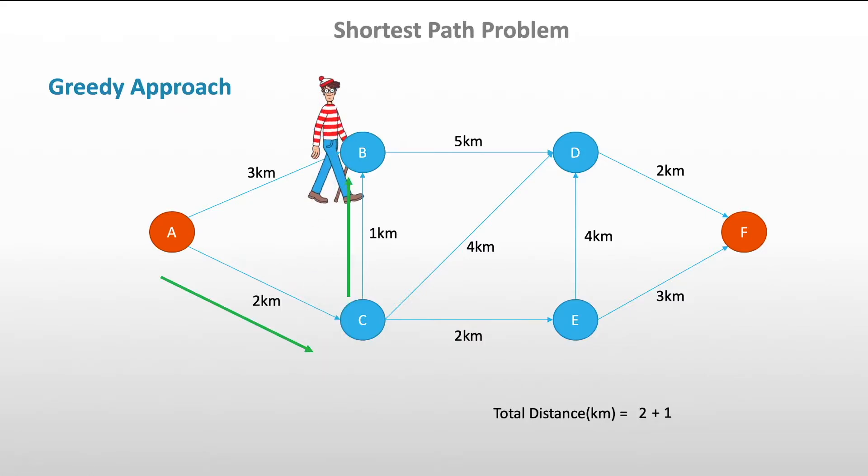From point B, he only has one option, and that is to go to point D. And then from there, he also has just one option, which is two kilometers, and that ends him up at point F for a total of 10 kilometers.